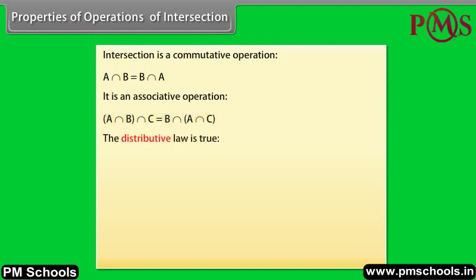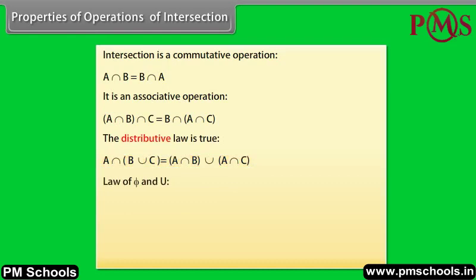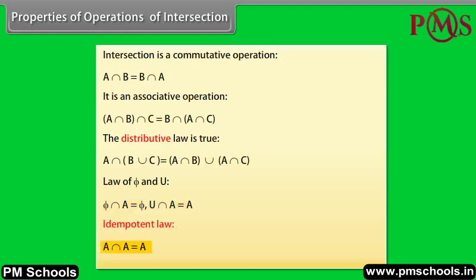The distributive law is true: A intersection (B union C) is equal to (A intersection B) union (A intersection C). Law of phi and U: phi intersection A is equal to phi; U intersection A is equal to A. Idempotent law: A intersection A is equal to A.